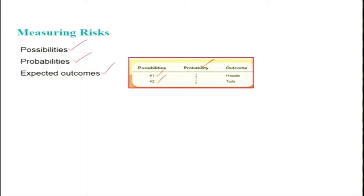Taking the same coin example — what is the chance of each of these two outcomes occurring? If the coin is fair, it will come down heads half the time and tails the other half. If we toss a fair coin thousands or millions of times, it would come down heads half the time and tails the other half. For any individual toss, the coin has an equal chance — the probability of heads is 0.5 and tails is also 0.5.